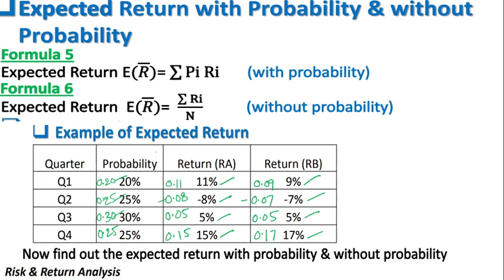Hi viewers, welcome to this session. Today we are going to discuss about expected return with probability and without probability. Already in the last classes we have discussed how to calculate the expected return for one year or more than one year, and we know about dividend yield, capital gain, expected return, and holding period return. Today we are going to discuss including the variability of probability into the expected return, and also without including the probability into the expected returns.